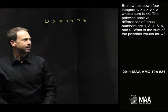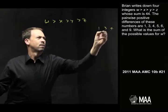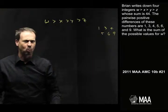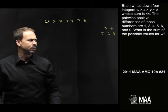The pairwise positive differences of these numbers are 1, 3, 4, 5, 6, and 9. I know I just read it, but I'm not quite sure what I read. Where do we keep going? What is the sum of the possible values for w?